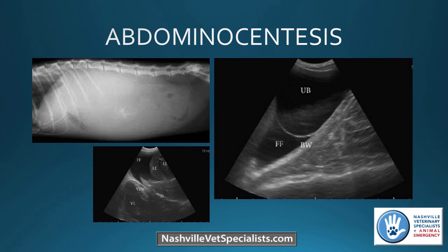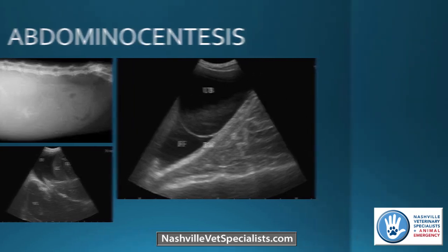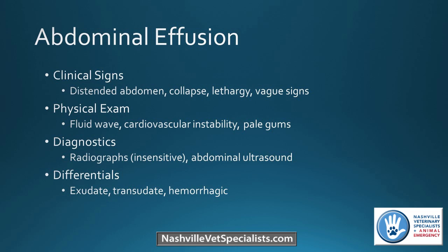The next procedure is abdominocentesis. The radiograph shows a lot of peritoneal effusion. Ultrasound images show free fluid around the bladder and around a liver lobe. Clinical signs of abdominal effusion include a distended abdomen. Sometimes patients present for collapse or lethargy with vague clinical signs. On physical exam you may find a fluid wave, pale gums, weak pulses, or low blood pressure.